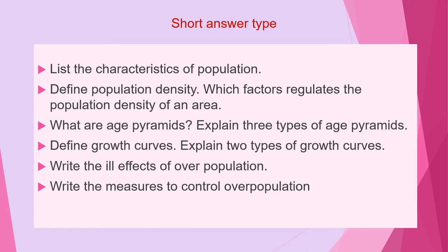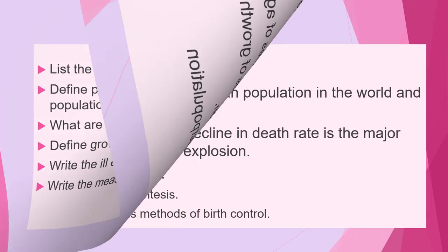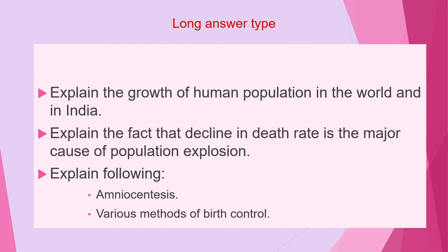These short answer questions you have to answer in one single paragraph. The third category of questions are long answer questions. The first question of this category is: explain the growth of human population in the world and in India. Next question is: explain the fact that decline in death rate is the major cause of population explosion.